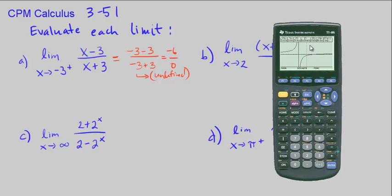Here's the graph. Here's our origin — negative 1, negative 2, negative 3. There is a vertical asymptote at x = -3. As we're approaching negative 3 from the right, the graph is going down. As we're approaching negative 3 from the left, the graph is going up.